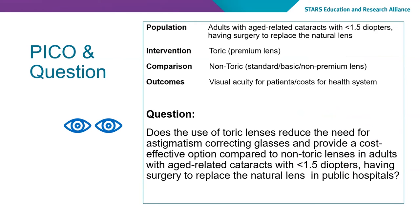The population are adults with age-related cataracts, 1.5 diopters, having surgery to replace the natural lens. The intervention is a toric or premium lens. The comparison is non-toric — the other types of lenses. The outcomes are visual acuity for patients and cost for the health system. So the question becomes: does the use of toric lenses reduce the need for astigmatism-correcting glasses and provide a cost-effective option compared to non-toric lenses in adults with age-related cataracts with 1.5 diopters having surgery to replace the natural lens in public hospitals?